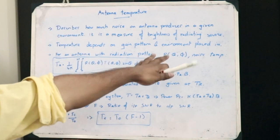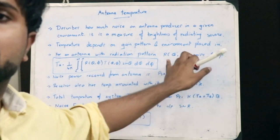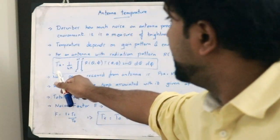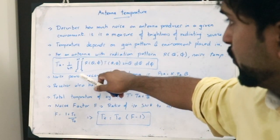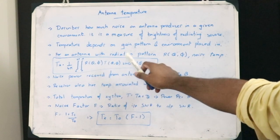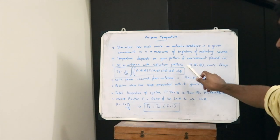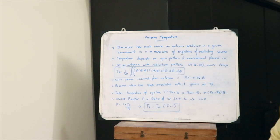For an antenna with a radiation pattern R(θ, φ), the noise temperature is given as T_A = 1/(4π) ∫∫[0 to π, 0 to 2π] R(θ, φ) T(θ, φ) sin(θ) dθ dφ. This is the basic expression for the temperature of a particular antenna.